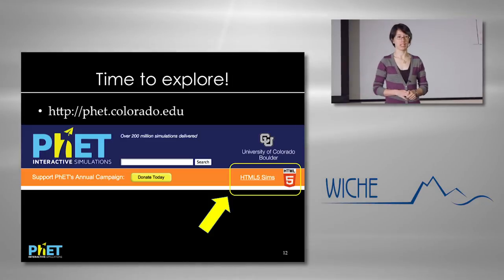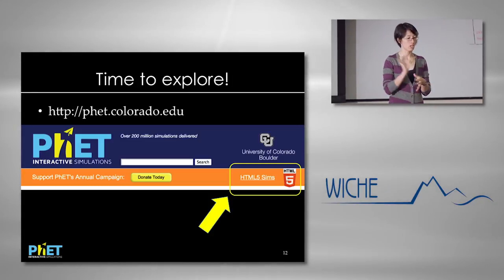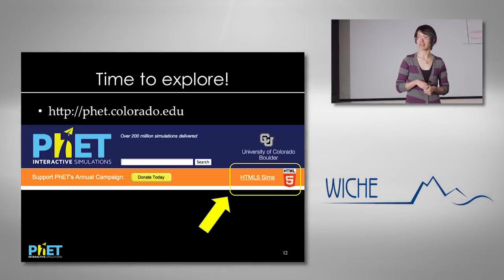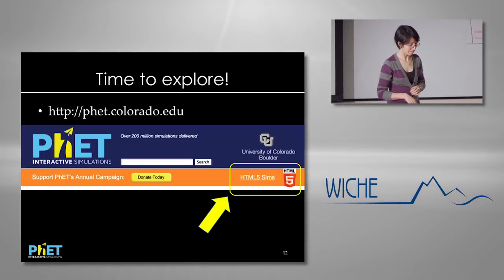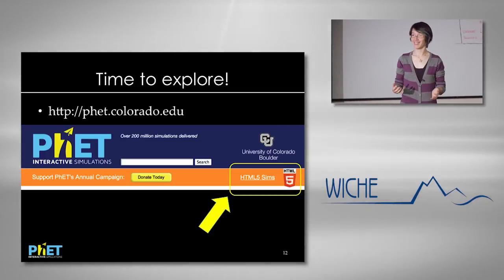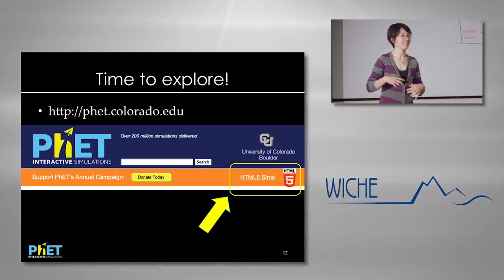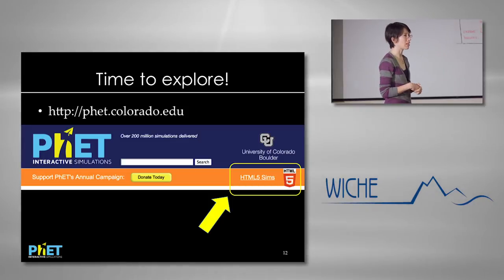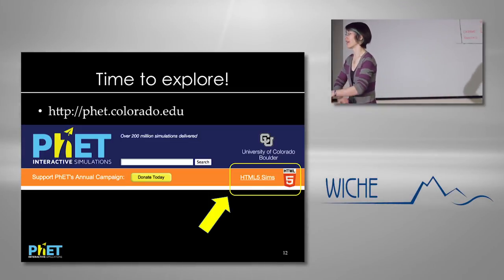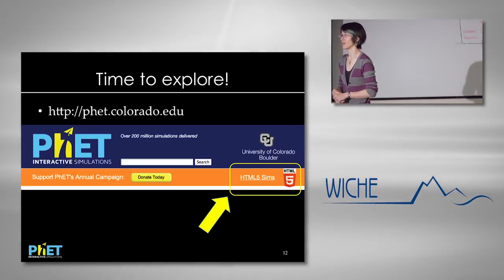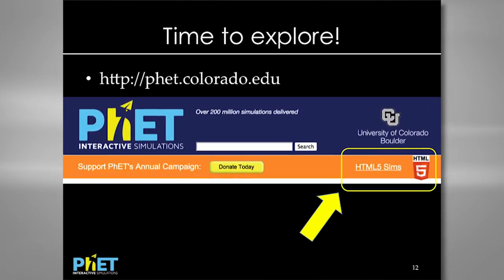Open the website and on the right-hand side there'll be a link that says 'HTML5 sims.' I'll have this half of the room open the Color Vision simulation once you're on that page, and you folks on this side are going to be exploring Wave on a String, which is all the way at the bottom of the page. I'm picking ones that hopefully won't overlap with your expertise so that you'll have a chance to really explore.